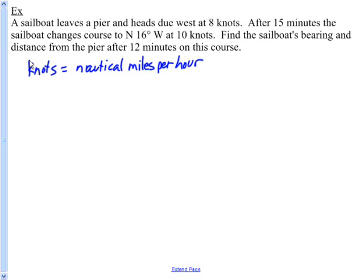We're going to go straight west for 15 minutes. If we're going 8 knots, 8 nautical miles per hour, but we're only going for 15 minutes, 15 of 60 minutes, in other words a fourth of an hour. So 8 times 15 over 60, which is 2. So we've gone 2 nautical miles west from this port.